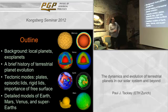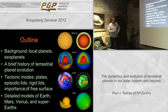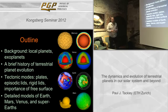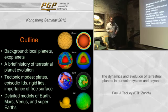I'll start by introducing some things related to local planets and exoplanets, because it's a broad audience, and then give a brief history of how terrestrial planets are thought to have evolved, and then talk in general about what causes plate tectonics, because the terrestrial planets exhibit several types of tectonic behavior. Earth has plate tectonics; other planets so far do not, so one of the major topics of research is what causes plate tectonics.